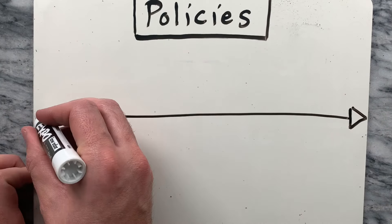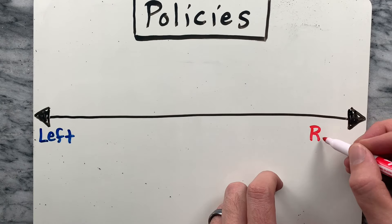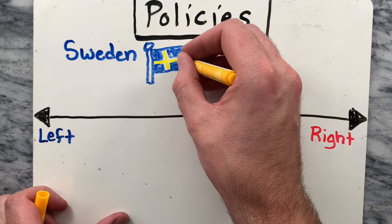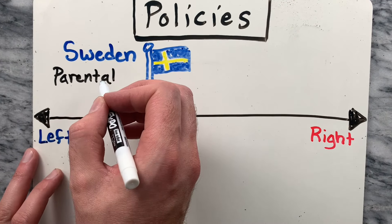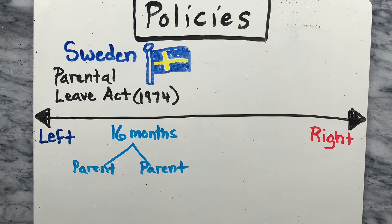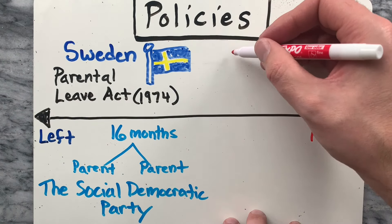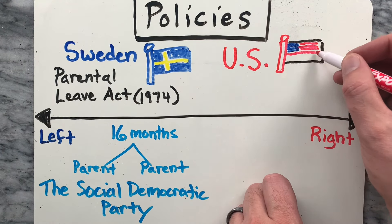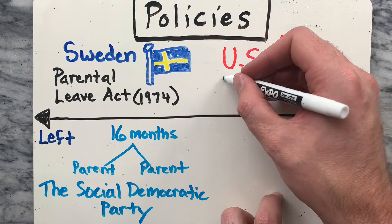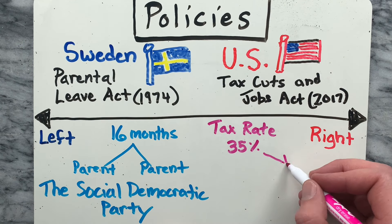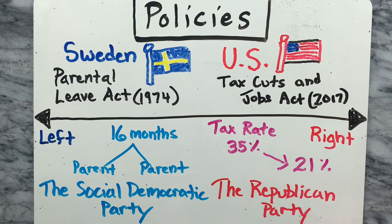Next, let's look at a couple of examples of policies and where they are positioned on the spectrum. An example of a policy on the left would be Sweden's Parental Leave Act in 1974. Sweden became the first country in the world to introduce parental leave that could be split between two parents of a child. It was pushed forward by the Social Democratic Party, which is known to pass progressive policies on social change. An example of a policy on the right would be the United States Tax Cuts and Jobs Act in 2017, which reduced tax rates for businesses from 35% to 21%. It was implemented by the Republican Party, which generally supports laissez-faire economics.